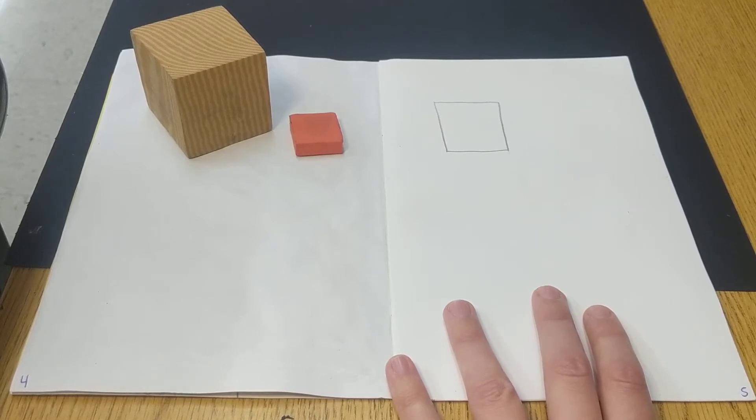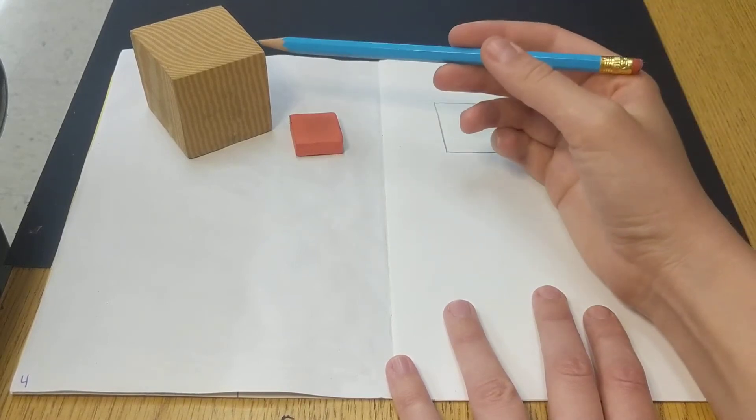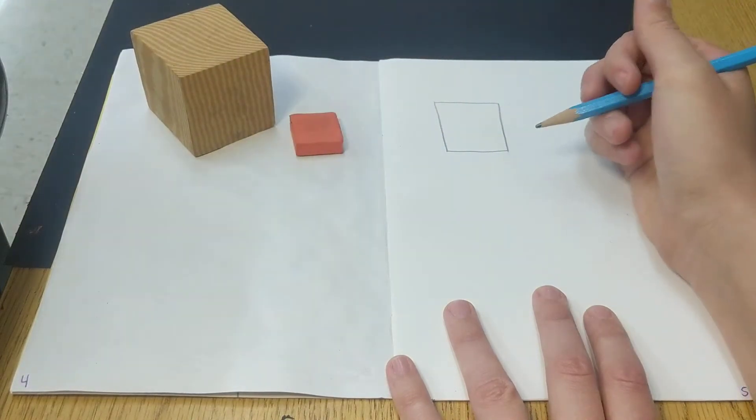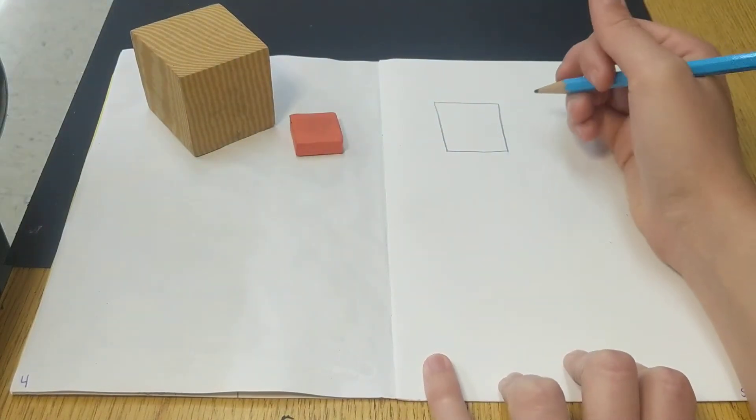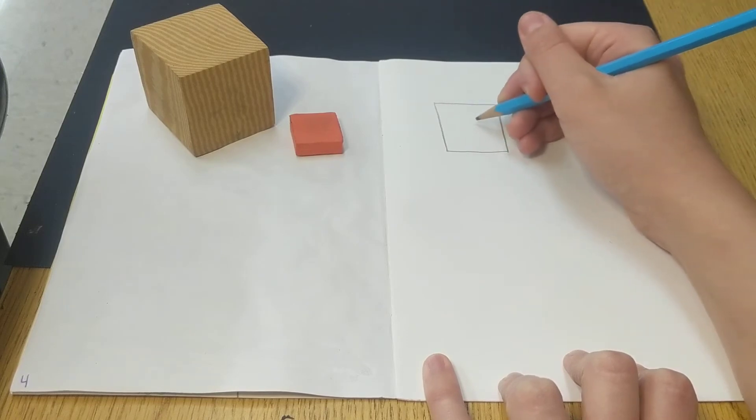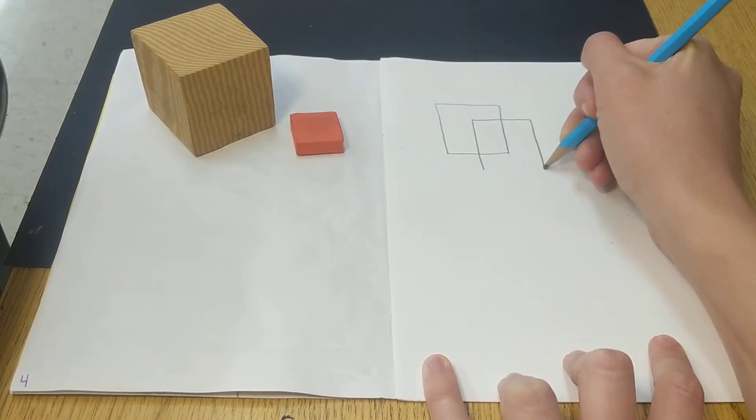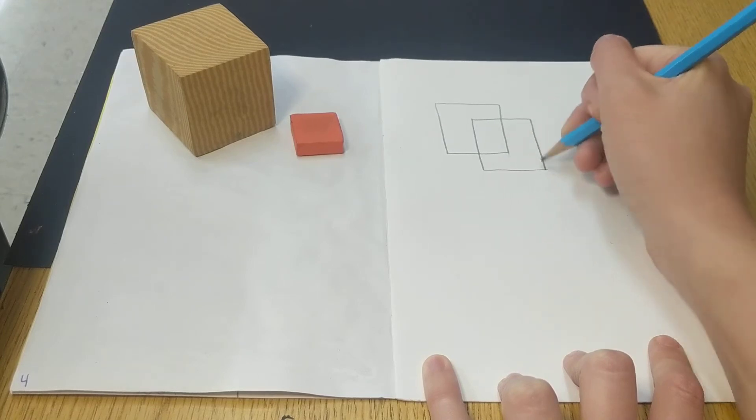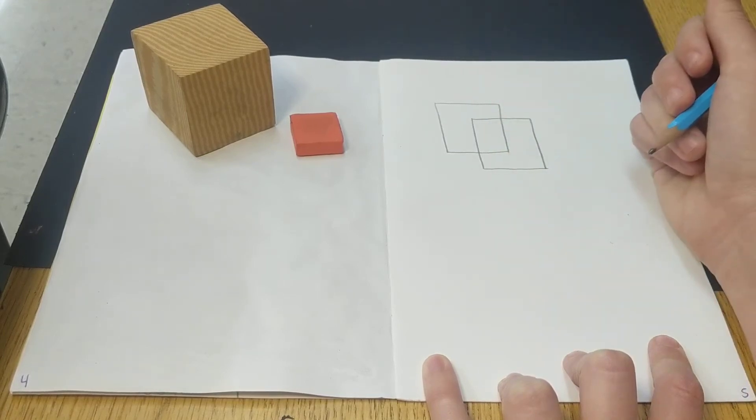So that's a square. But if we want to turn it into this cube, there's a couple things we can do. I'll show you a few different ways. One way is to go slightly down and draw another square that's the same in front of it so they overlap. See that?